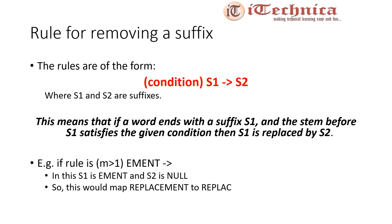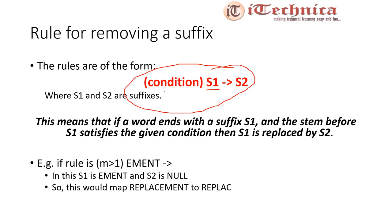For stemming using the Porter Stemmer, the rules are generally of the form (condition) S1 → S2, where S1 and S2 are suffixes. This means: if a word ends with suffix S1, and the stem before S1 satisfies the given condition, then S1 will be replaced by S2.